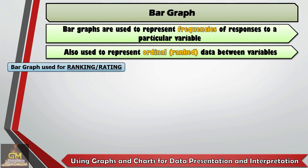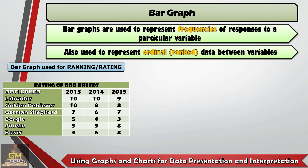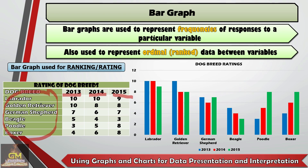Let's look at this example of a bar graph used for ranking or rating. We have this rating on the different dog breeds for three consecutive years: 2013, 2014, and 2015. We have the different dog breeds and the responses per year. If we convert this into a bar graph, we have each year represented by a particular color — blue for 2013, red for 2014, and green for 2015. From this graphic organizer, we're able to recognize that the Labrador has consistent high scores in terms of rating, while the Beagle is the breed that has the lowest rating for three consecutive years.